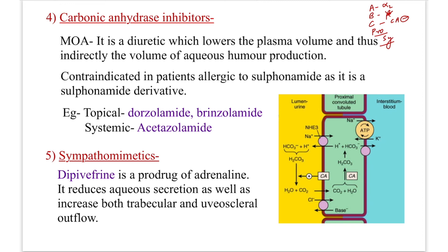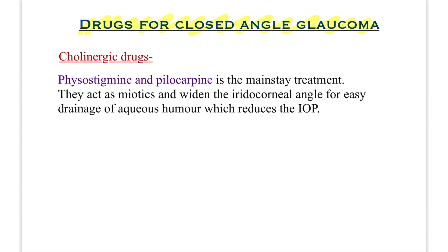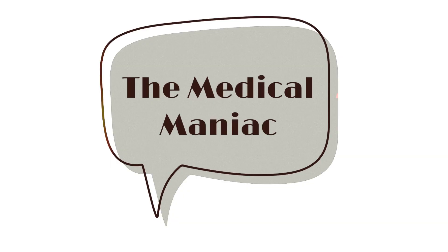For closed-angle glaucoma, we use cholinergic drugs, which act as miotics — they constrict the pupil. Drugs here are physostigmine and pilocarpine. They widen the iridocorneal angle for easy drainage of aqueous humor, reducing intraocular pressure. That was all about glaucoma — I hope I made this topic easy for you. If yes, give it a like and hit subscribe. Signing off, this is Palak Sanghai.